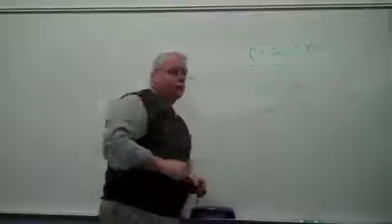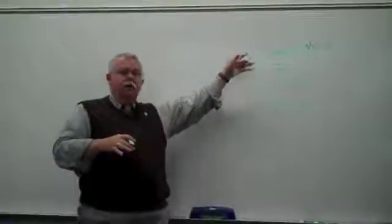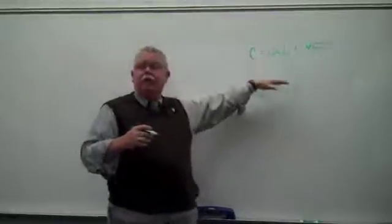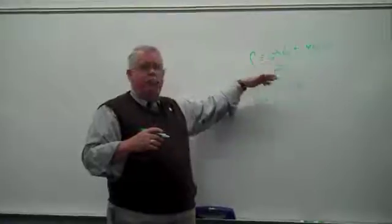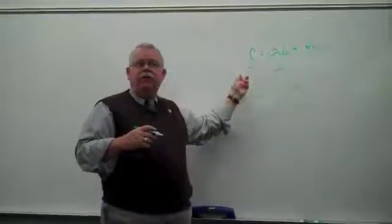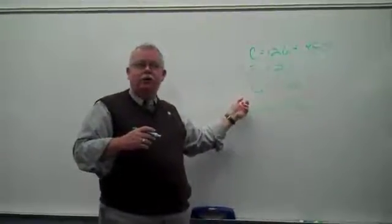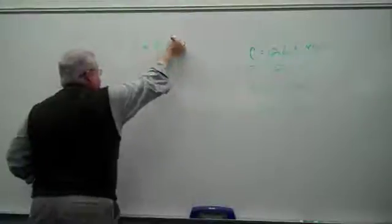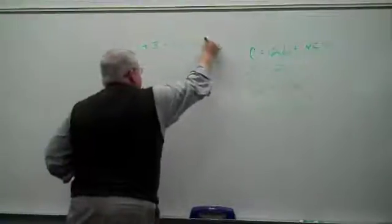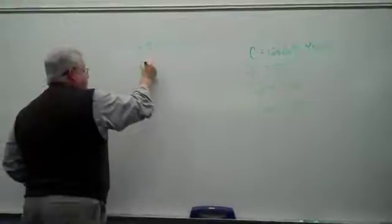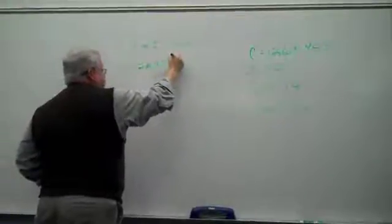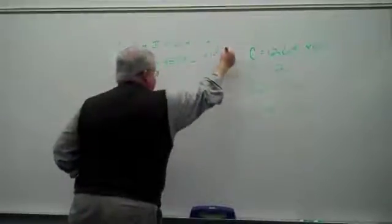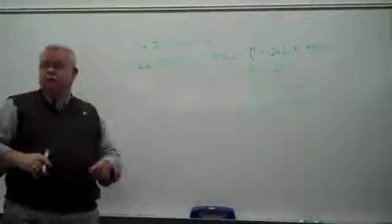So I give you the model, the numbers, and the first thing you generally do with it is you calculate the equilibrium level of GDP or the equilibrium level of spending given these four spending flows, right? And we set it up and we say that Y equals C plus I plus G plus net exports. And we just plug the numbers in.